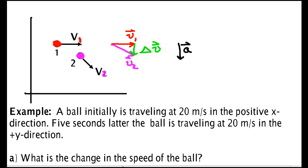So the average acceleration does not point in the direction the ball is going at v1, and it doesn't point in the direction the ball is going at v2 — it points in the direction of the change. Your eye can kind of tell you which way v1 is and which way v2 is, but your brain isn't good at finding the difference. So it doesn't see the change in velocity well, and therefore it doesn't tell you where the acceleration vector points. That's one of the difficulties students have.